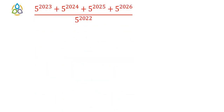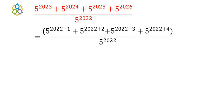We have 5 to the power 2023 plus 5 to the power 2024 plus 5 to the power 2025 plus 5 to the power 2026, whole divided by 5 to the power 2022. The lowest power of 5 is 2022 and the highest is 2026. Expressing all higher powers in the form of 2022 plus something, we can write: 5 to the power 2022+1, plus 5 to the power 2022+2, plus 5 to the power 2022+3, plus 5 to the power 2022+4, all divided by 5 to the power 2022.